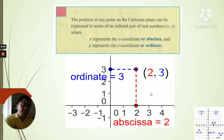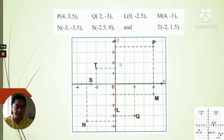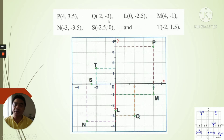Here we have a graph with several points already plotted. Point P has coordinates (4, 3.5) — both positive — so it's in Quadrant 1. The x is 4 and the y is 3.5, which is halfway between 3 and 4 on the y-axis. Point Q has coordinates (2, -3) — positive and negative — so it's in Quadrant 4.